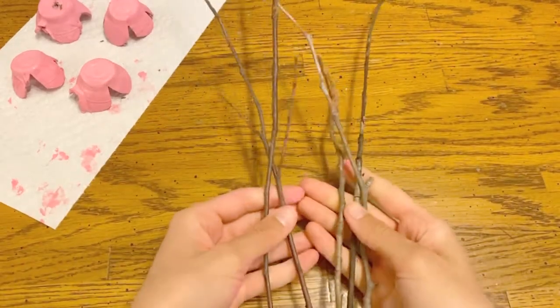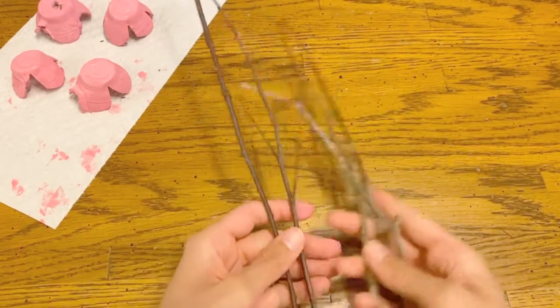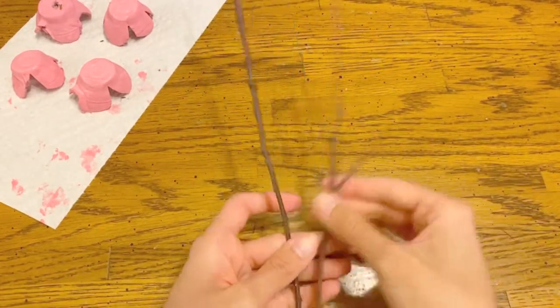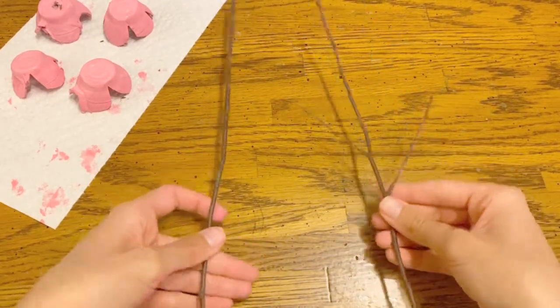Now for the branches. I actually went outside and found some small, thin sticks. I looked for ones that were mostly straight. You could use pipe cleaners too. I'm gonna use these two, I think.